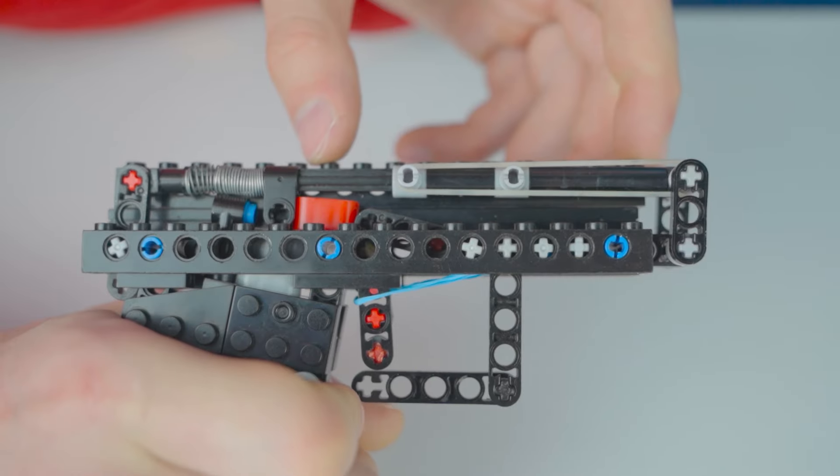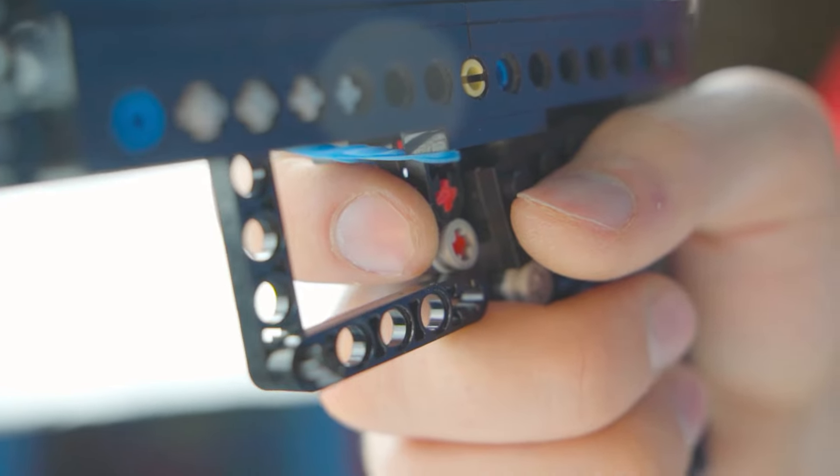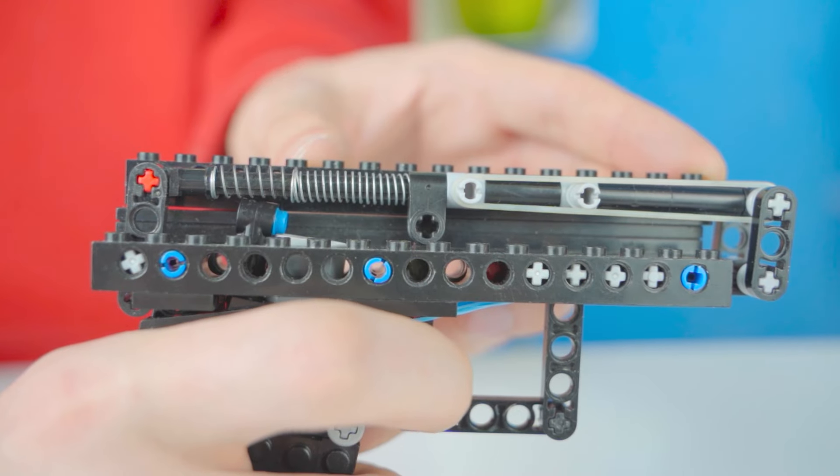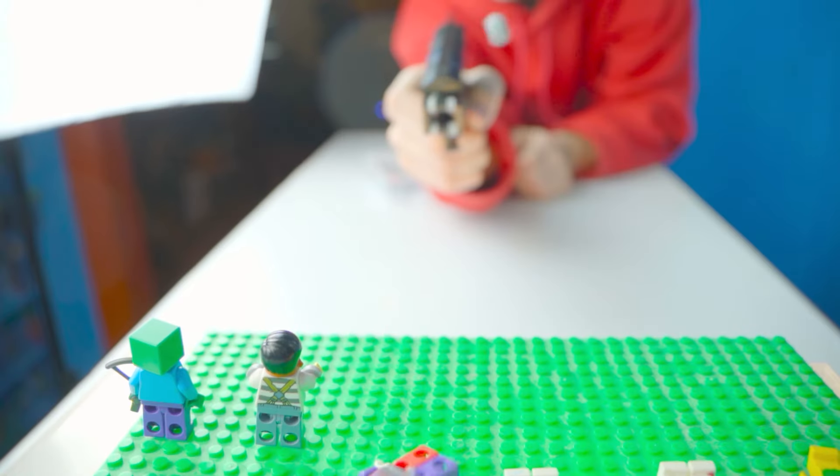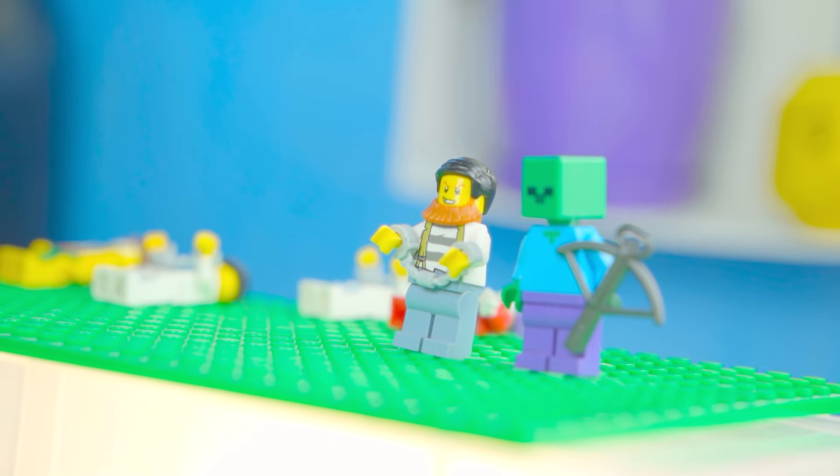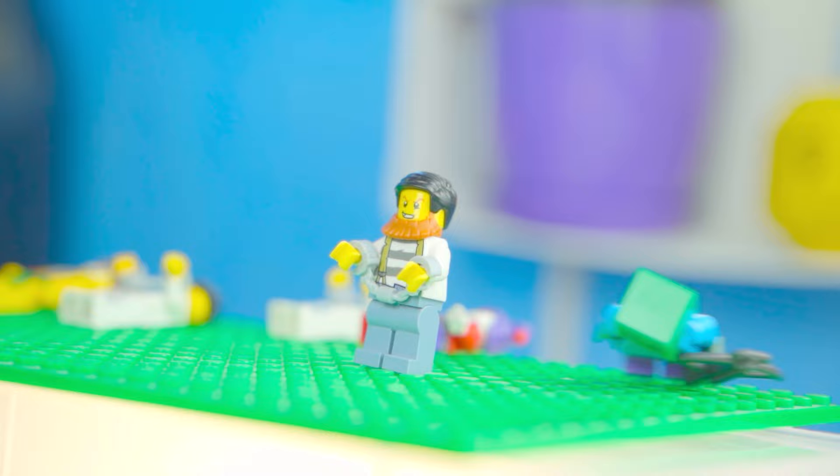Which does not allow the spring to straighten again. In this position, our Lego gun is considered loaded until we pull the trigger. At that moment, the trigger mechanism will no longer hold back the spring, and it will straighten out in a flash, transferring all the stored energy to the cartridge. This way, you can reload until the magazine is empty.